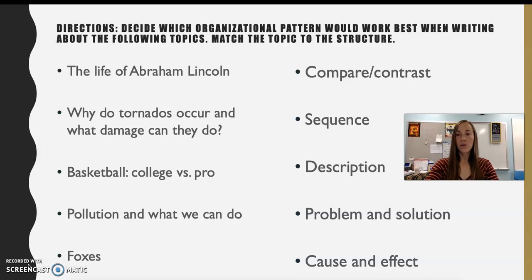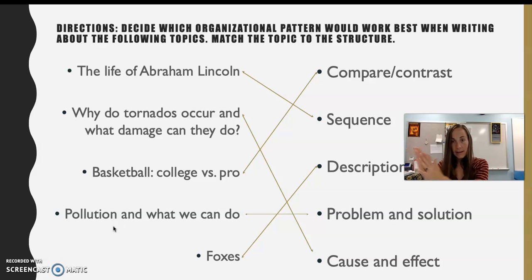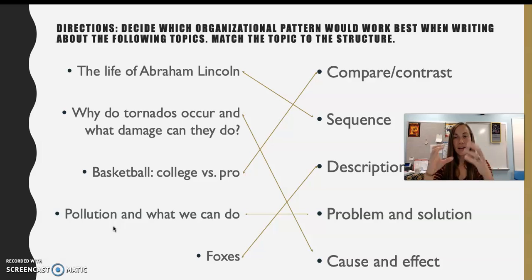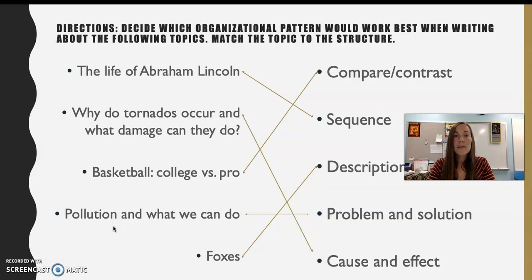Now I'm going to go over this with you. The life of Abraham Lincoln — the entire life spans from birth to death and everything in between. That's a sequence. If you look up a person on Wikipedia, the sections are usually organized in sequential order: early life, education, career, and other facts. So if you were to write about Abraham Lincoln, you could write it chronologically, in order from birth to death.